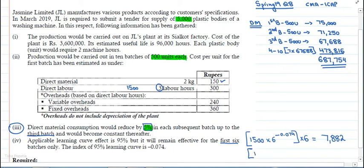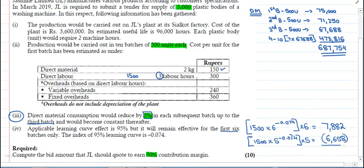Now subtract 5 batches total time, which is 1500 multiplied by 5 power negative 0.074 multiplied by 5, which equals 6,658 hours. This means we found that the 6th batch took 7,882 minus 6,658, which equals 1,224 hours. So for total hours: first 6 batches took 7,882 hours.